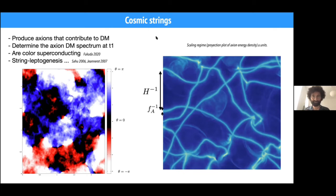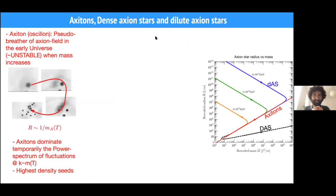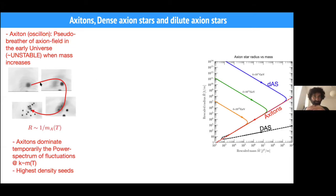The next element of axion substructure are axitons, which are sometimes discussed alongside dense axion stars and dilute axion stars. Axitons are just breathers of the axion field in the early universe. They consist of an axion field lump with theta of order one that is oscillating and radiating some relativistic axions. But in the early universe, because the axion mass increases with time, during simulations these axitons decrease and typically percolate. These axitons are very nasty because they dominate the power spectrum, but they can be very interesting because they can provide very high density seeds.